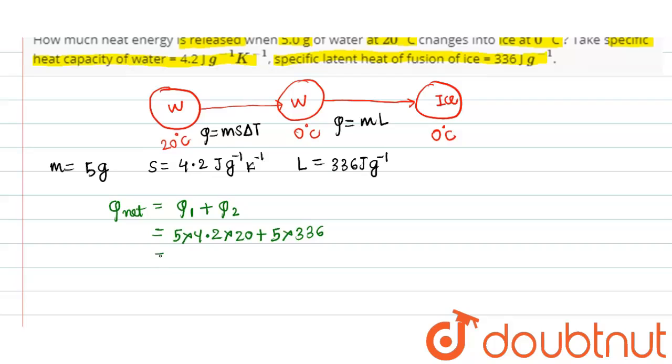From here friends, we get this as 5 into 4.2 into 20, which gives us 420, plus 5 into 336, which equals 1680.